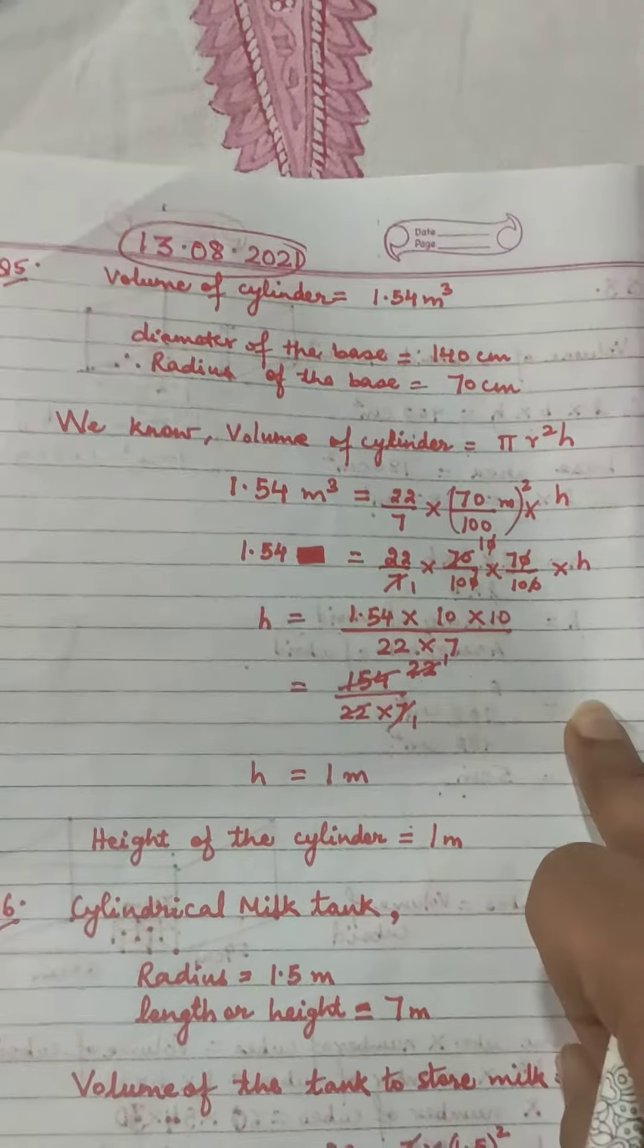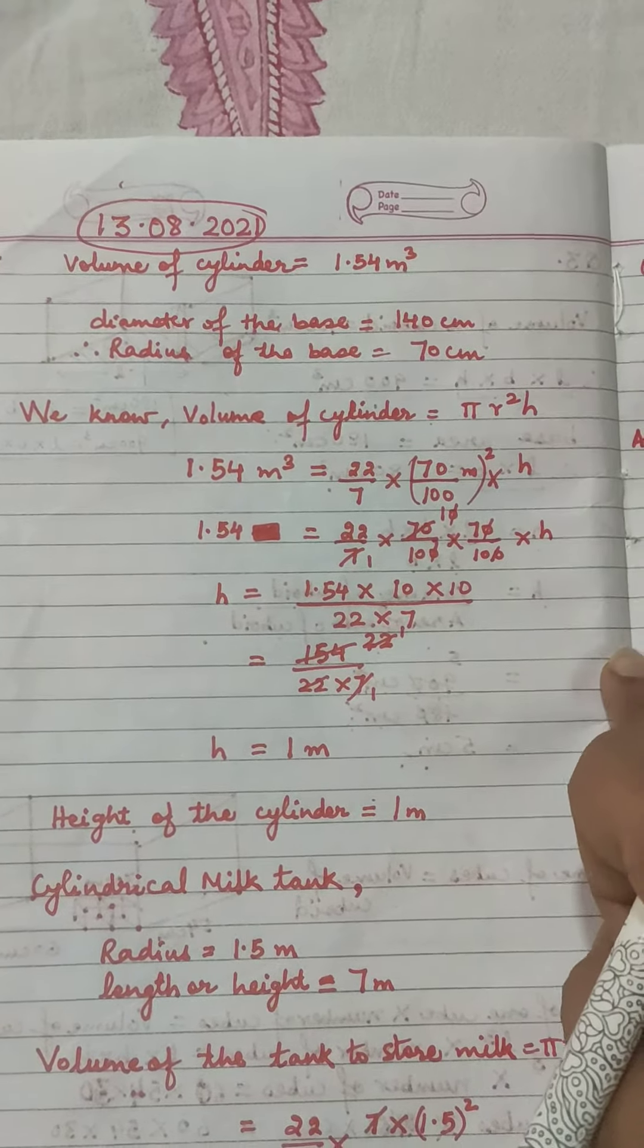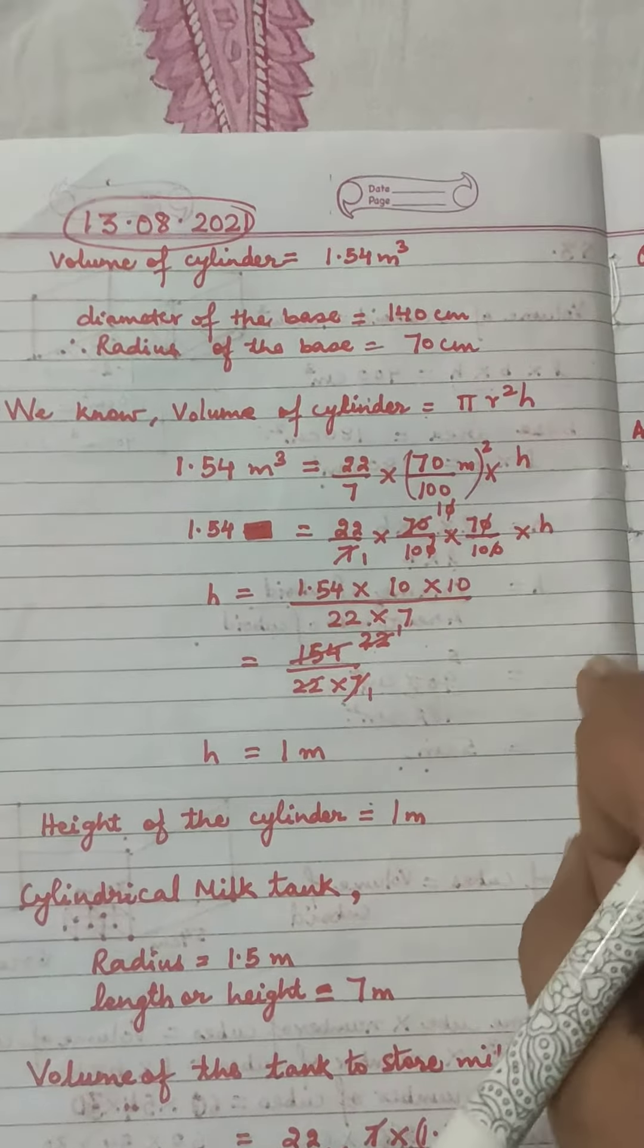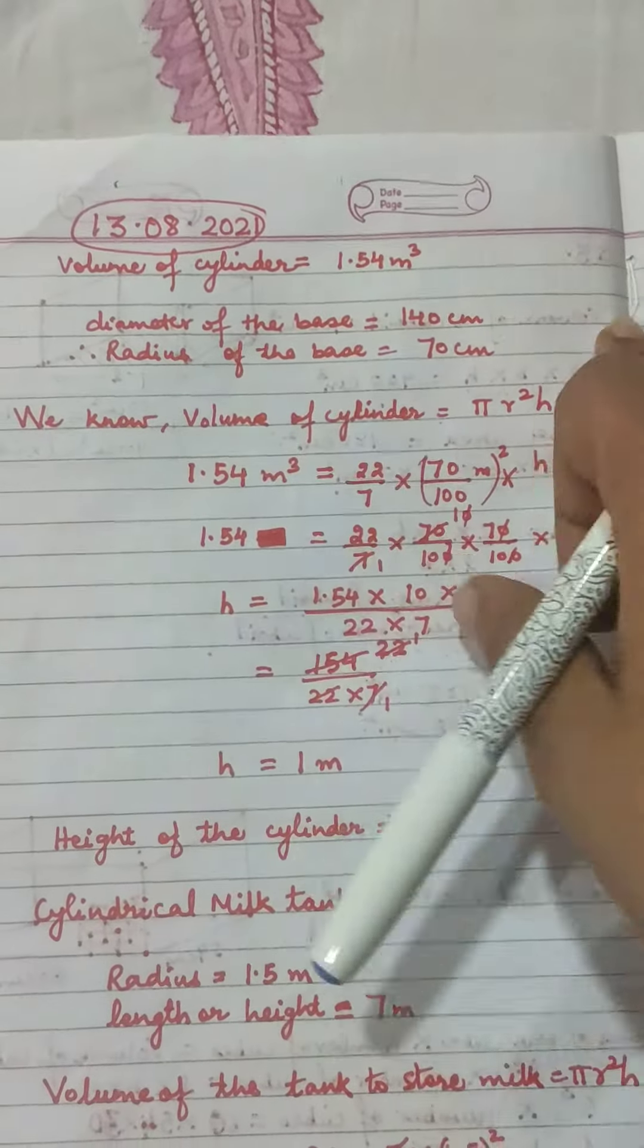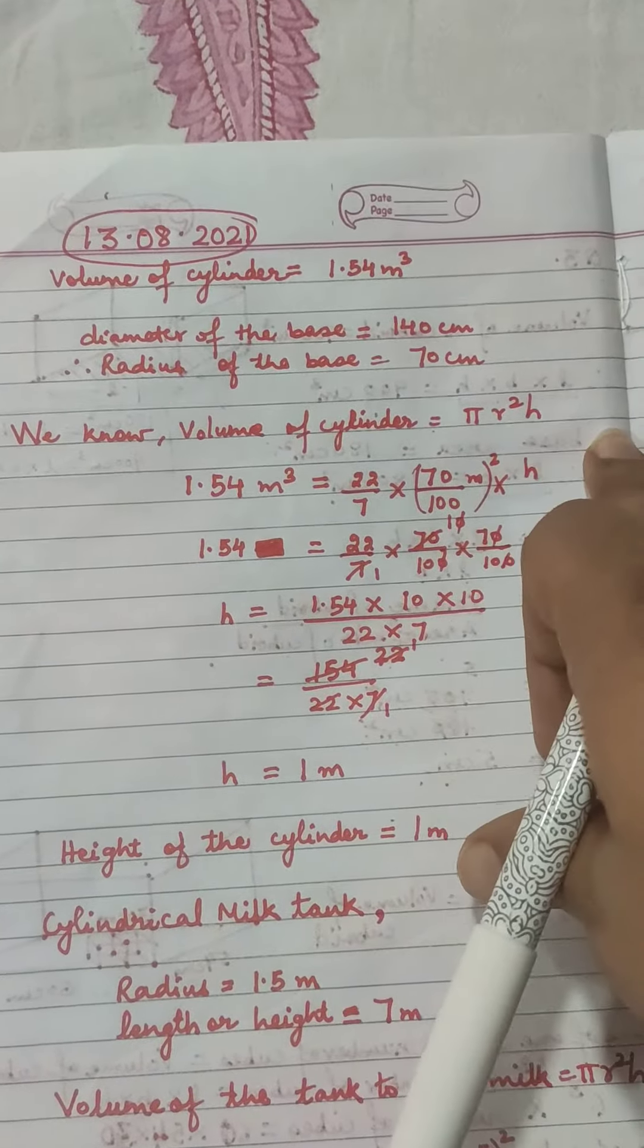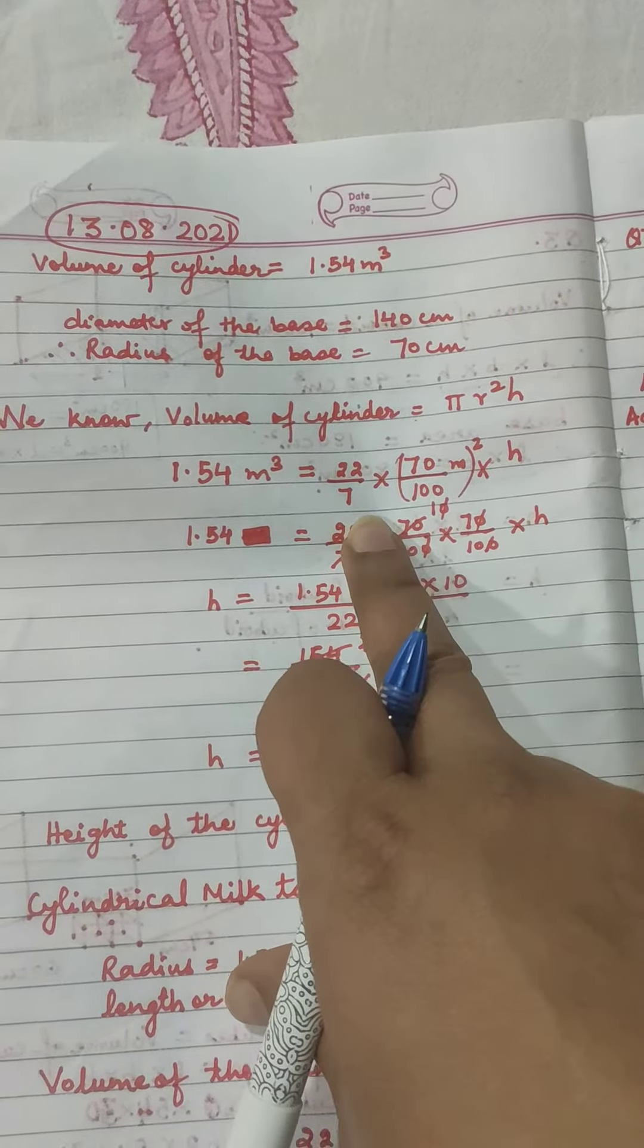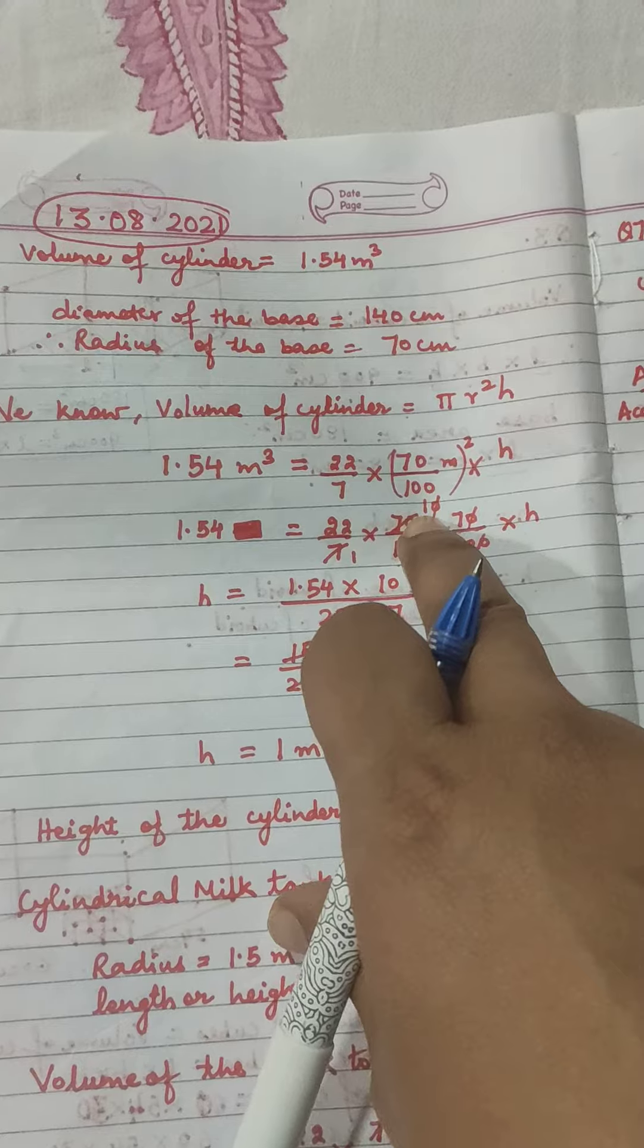question number 5 says: find the height of the cylinder whose volume is 1.54 m³ and diameter of the base is 140 cm. From diameter of the base, we will find the radius, right? So we know volume of cylinder equals πr²h. Now 1.54 m³ = 22/7 × (70/100)²